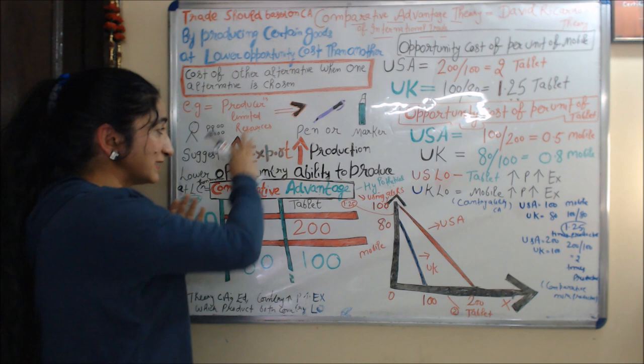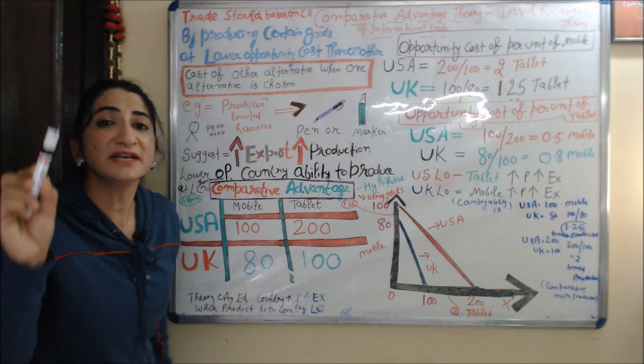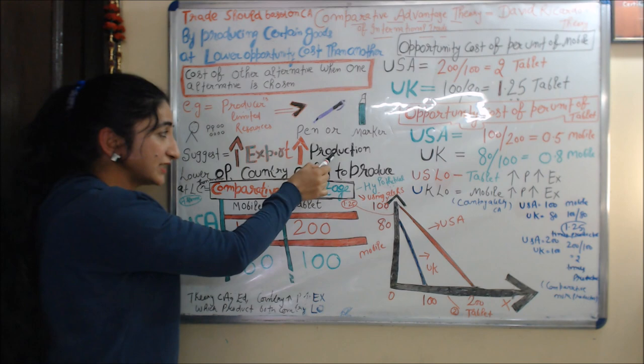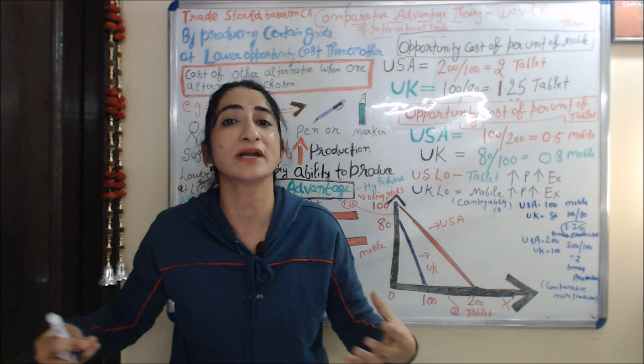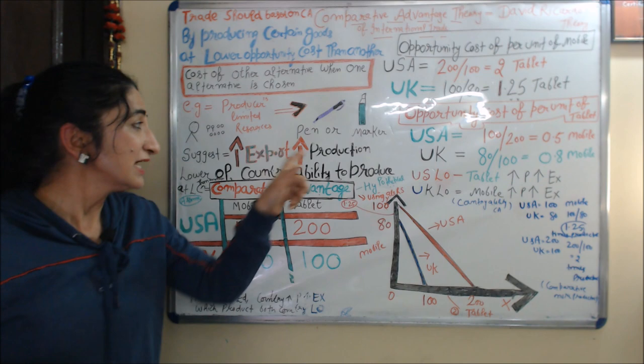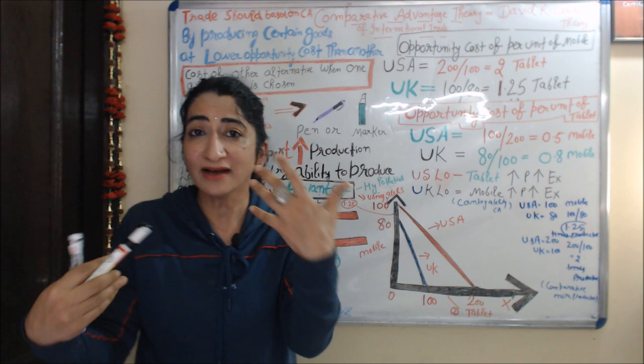This theory basically suggests a country should increase the production and export of that good in which the country has a lower opportunity cost. A country's ability to produce goods at a lower opportunity cost is called comparative advantage.